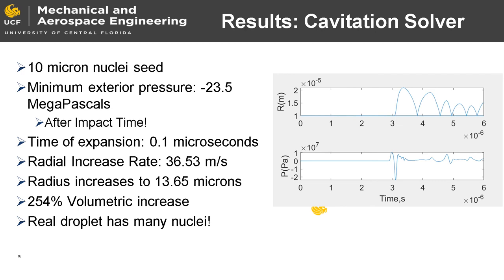The droplet point grid data is analyzed in the numerical cavitation solver, assuming an average dust particle size of 10 microns. The bubble of local air is seen to expand to 135% its initial size due to the local pressure drop within the period of 0.1 microseconds, and then oscillates as the pressure fluctuates. The resulting volume increase of the bubble is 250% its initial size.